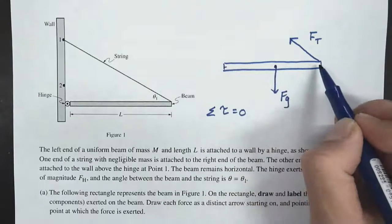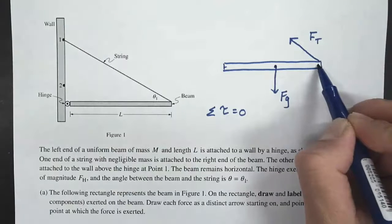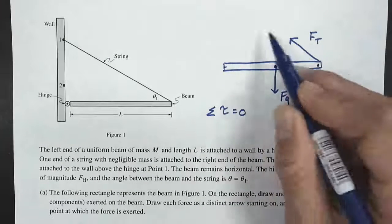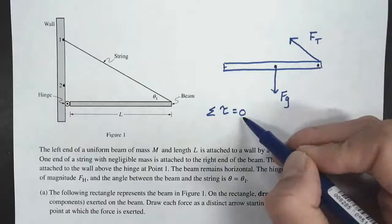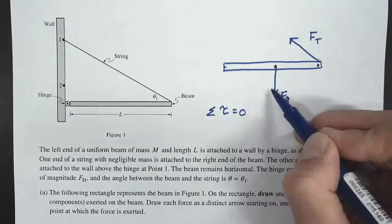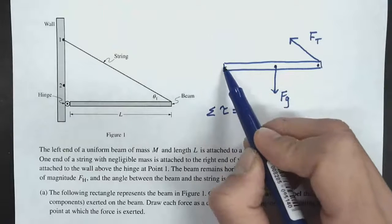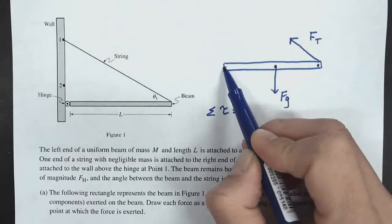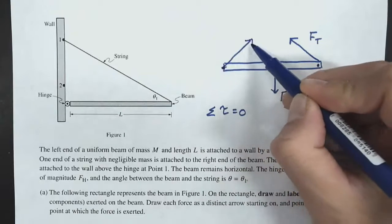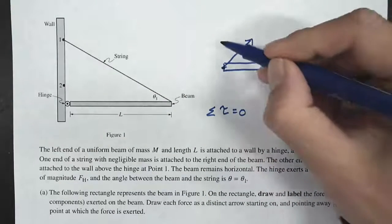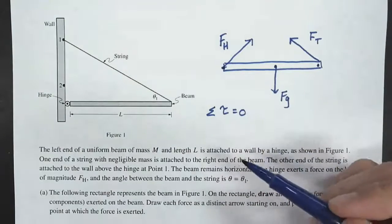If I pick the right end as my axis, the torque from all forces on the left needs to add up to zero. I know there's a force down from gravity, so there also needs to be a force up. Not only have I concluded there needs to be a force to the right, there also needs to be a force up. Combining those two, I know it's going to be at an angle — we'll call this FH, the force exerted at the hinge.